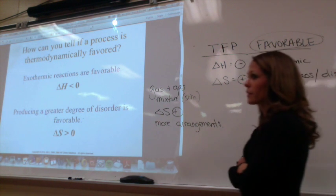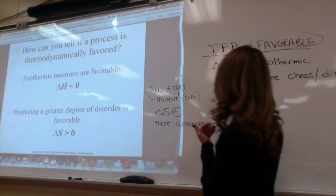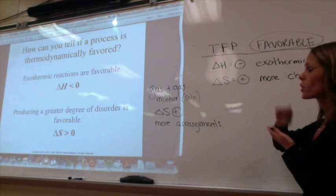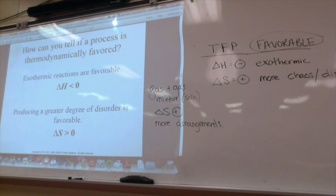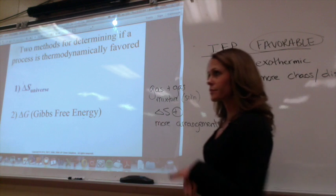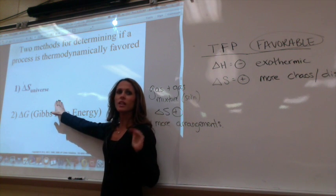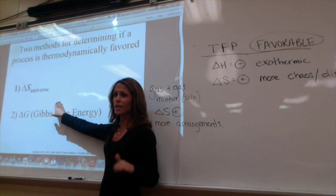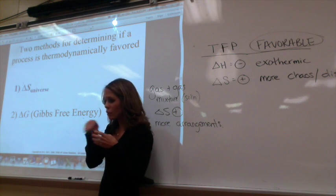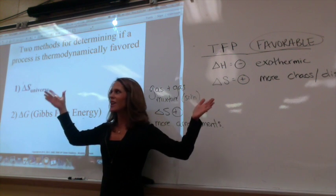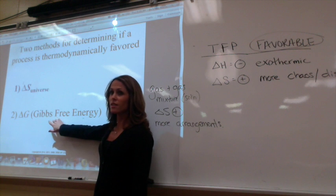How can you tell if a process is thermodynamically favored? Delta H negative (exothermic) is favorable; delta S positive (more disorder) is favorable. We determine this using Gibbs free energy. We can't measure the entropy of the universe directly, but we can use Gibbs free energy, which is the equation we'll focus on. The entropy of the universe is always increasing — if a reaction increases it, the reaction is thermodynamically favored.